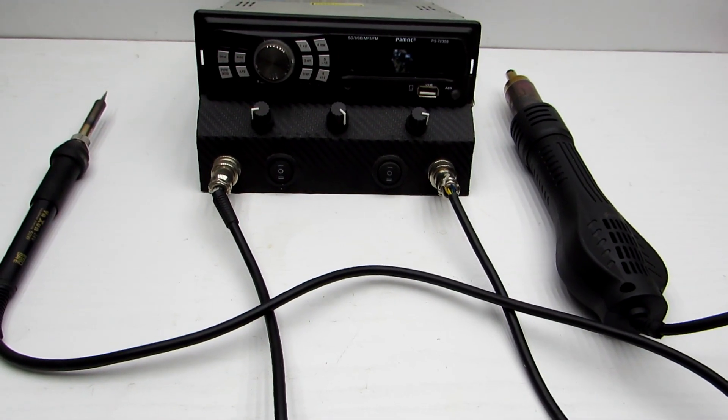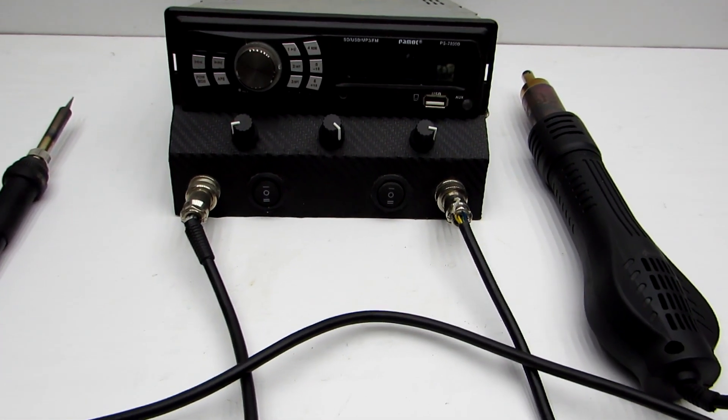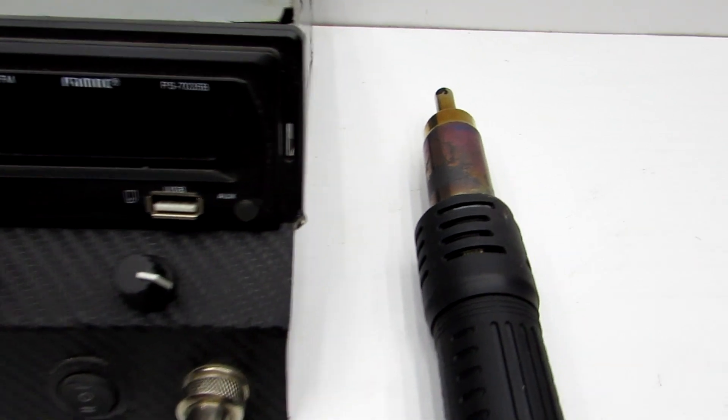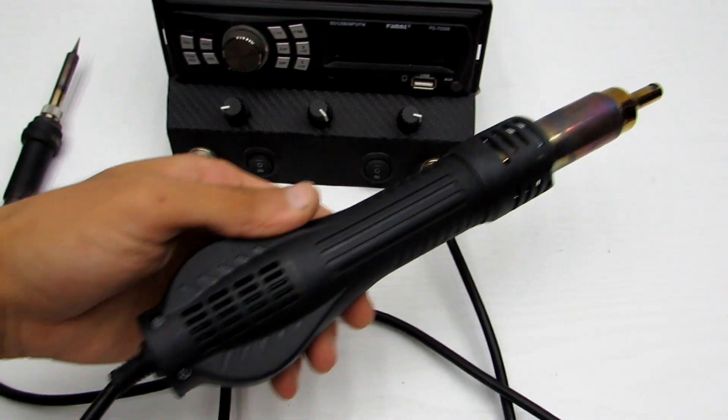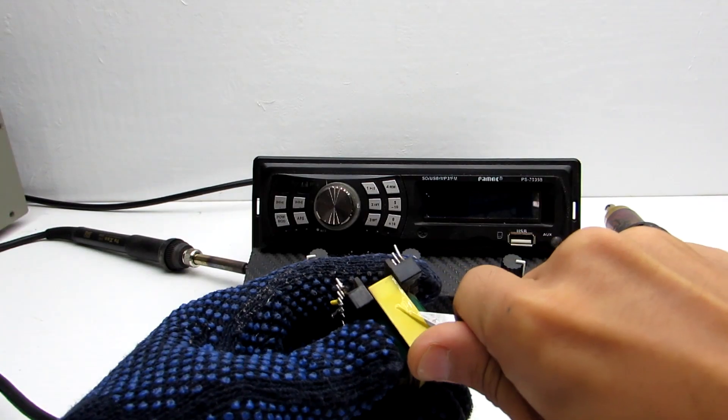The second method is to use hot air. If you have a hot air soldering station or hot air gun, you should heat the transformer core evenly on all sides,